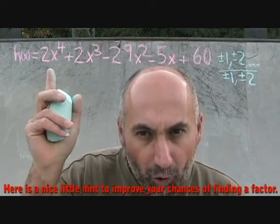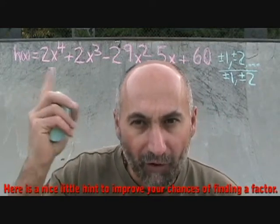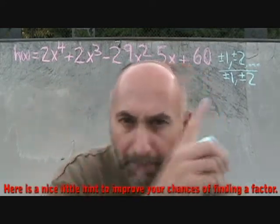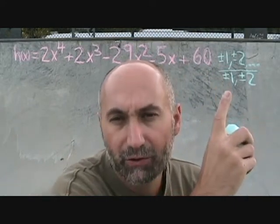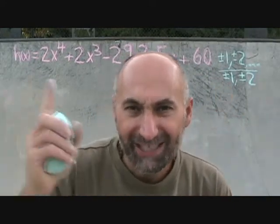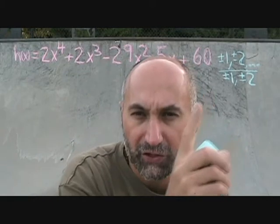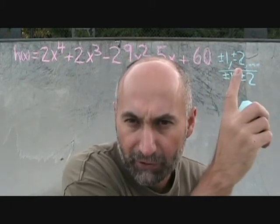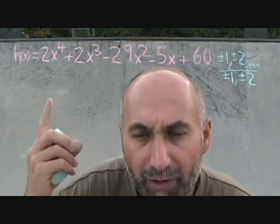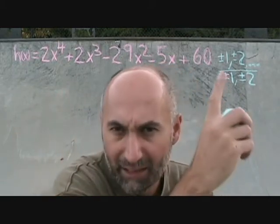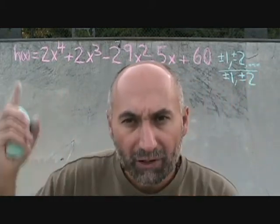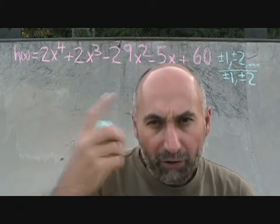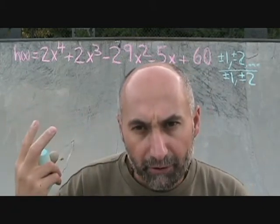There are tricks to this. If all the coefficients are positive, then a positive factor is not going to work because it won't cancel any of the coefficients. So you're going to try the negative factors first. Let's try one of these factors out — we're going to lay down the synthetic long division right here and just do it.